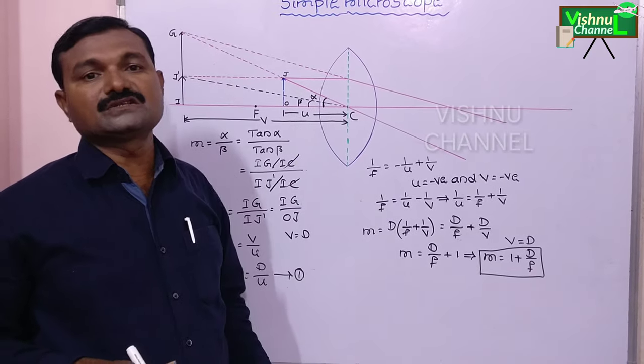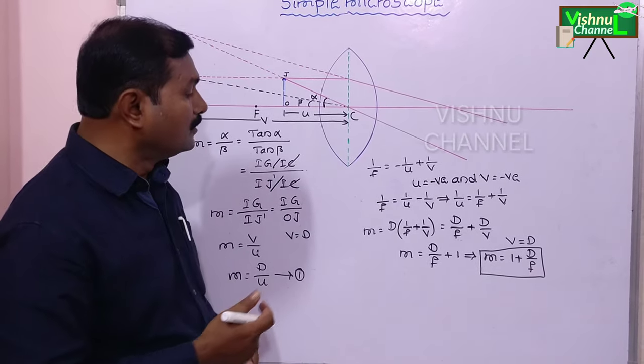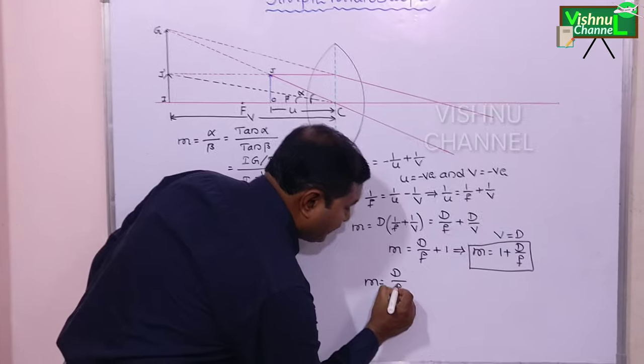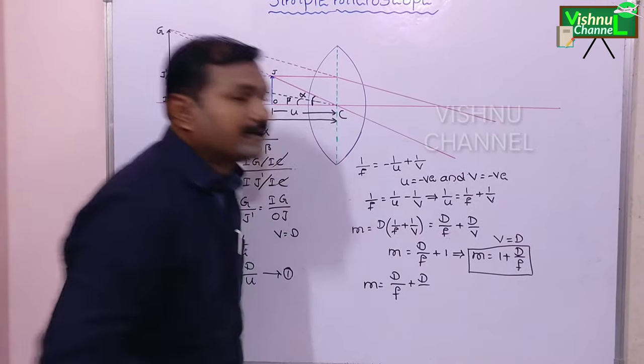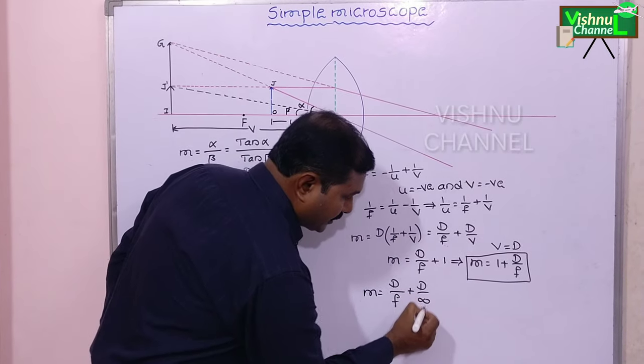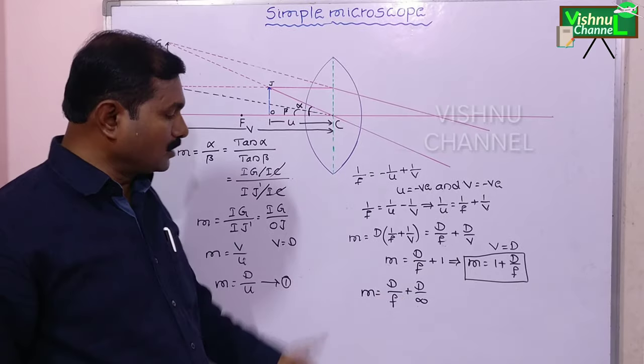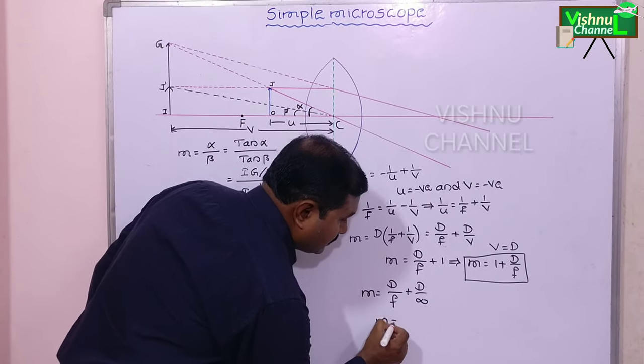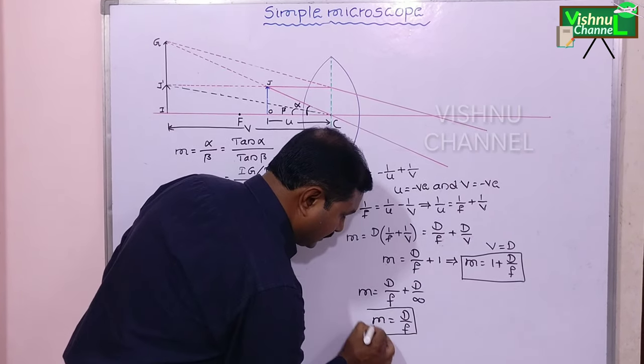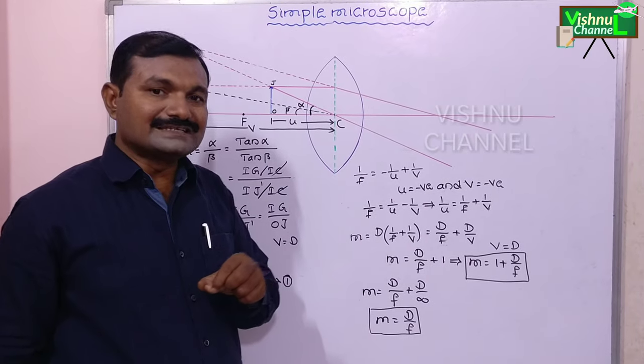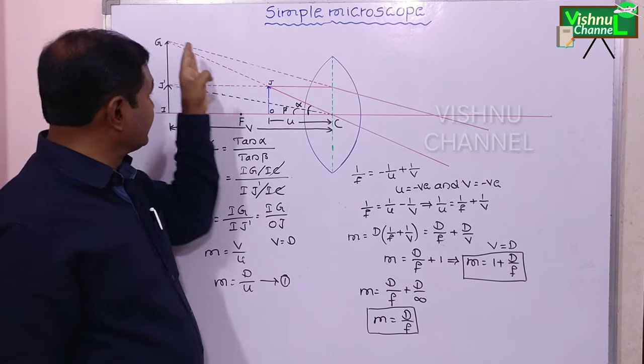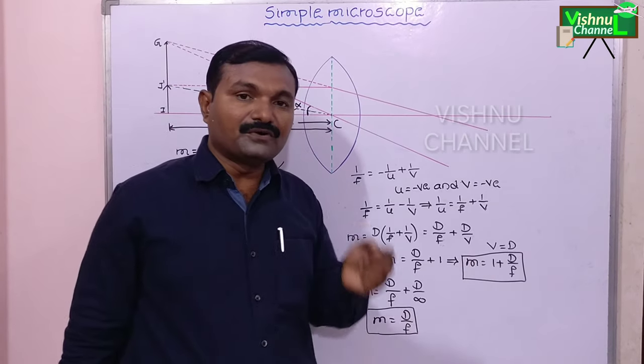If the image is formed at a far distance and the infinite distance, v equal to infinity. One by infinity equal to zero. So from this equation m is equal to d by f plus zero. So this is minimum magnifying power.